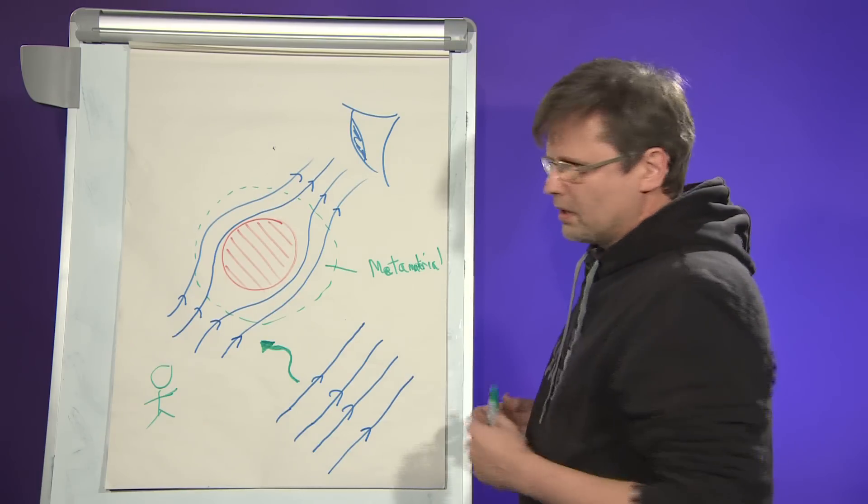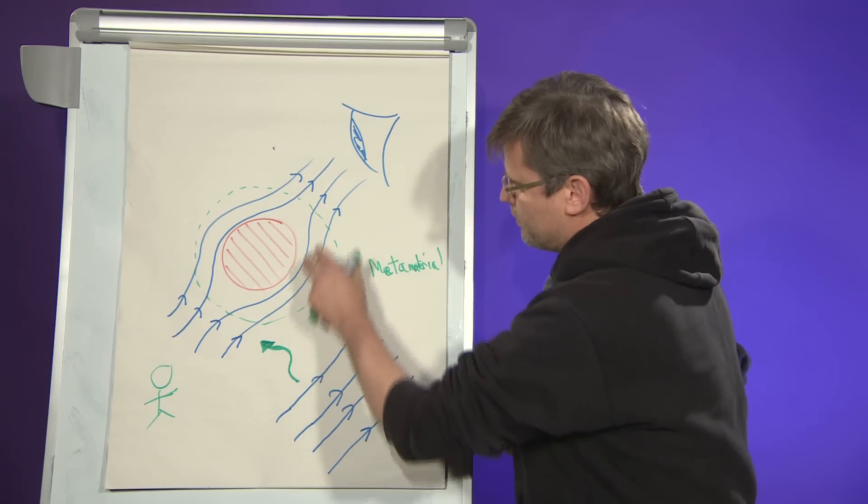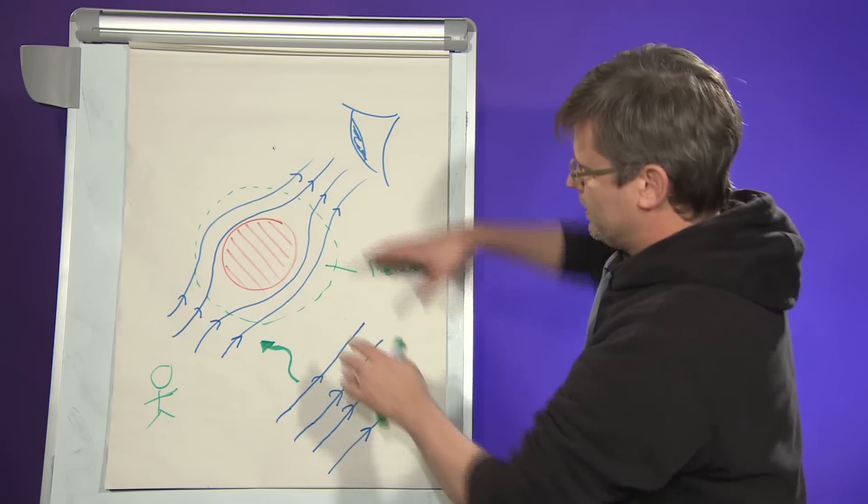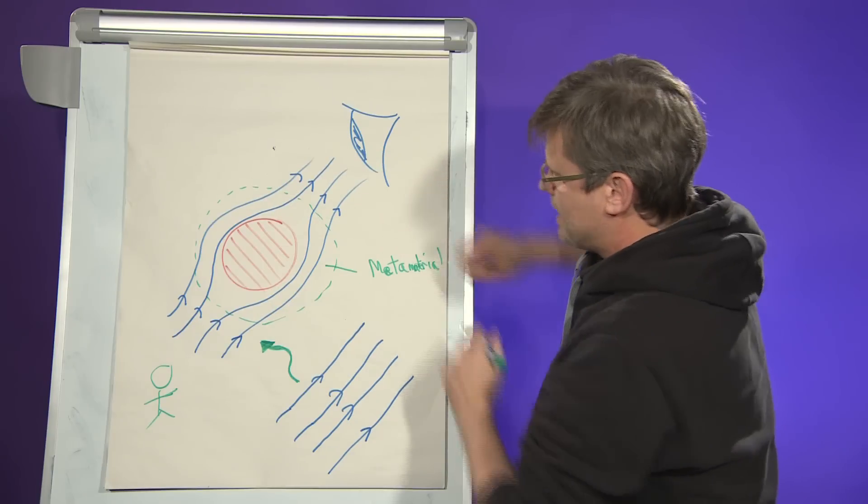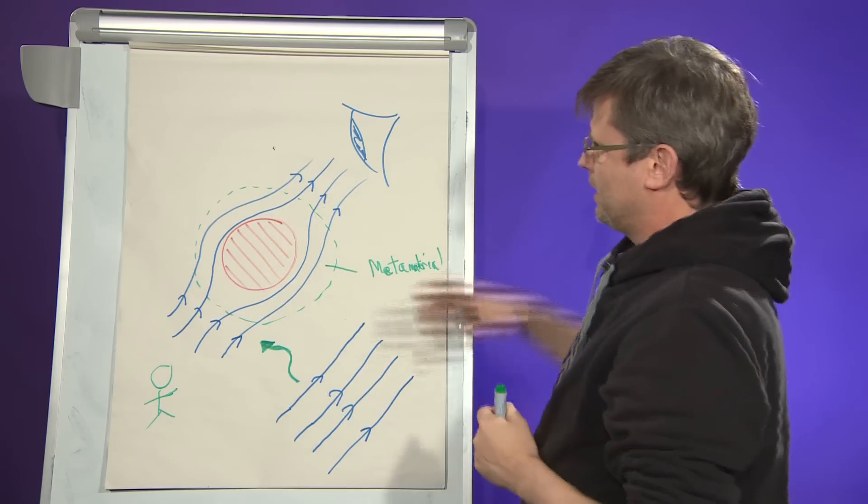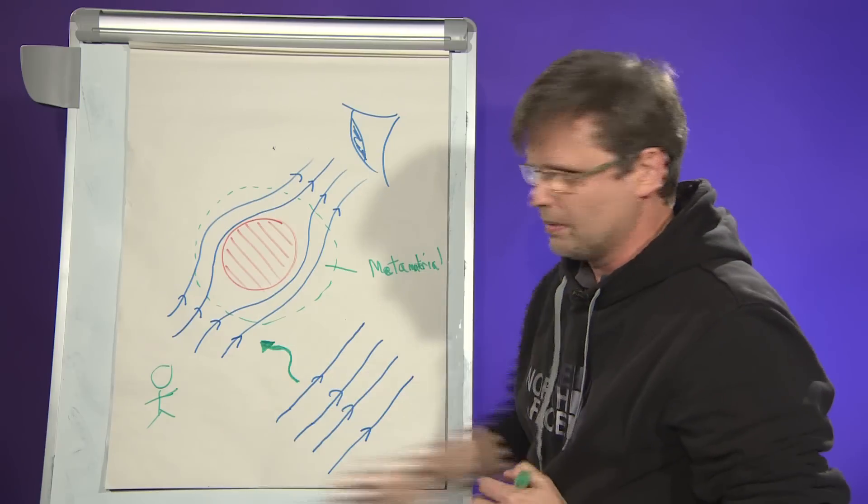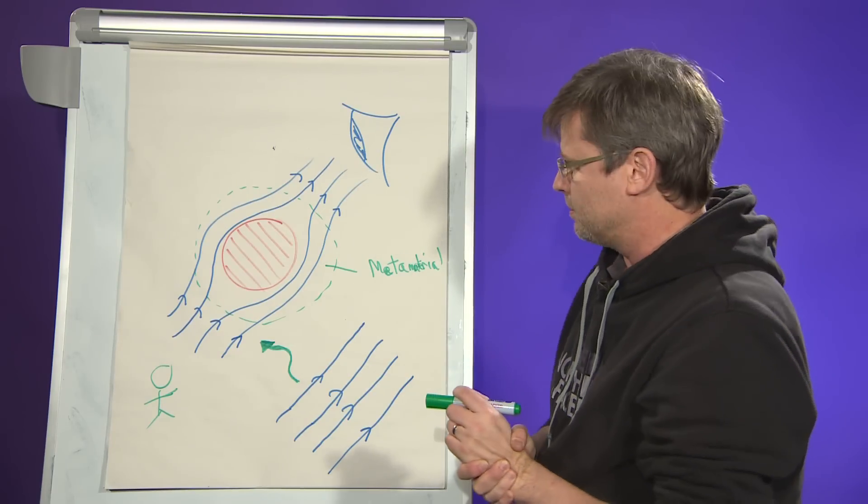But rather are called metamaterials, things that we can design in the laboratory to actually perform this operation. So we surround the object with a metamaterial, the light is then caressed around the object and it's restored to the straight line so that the person just sees the object behind.